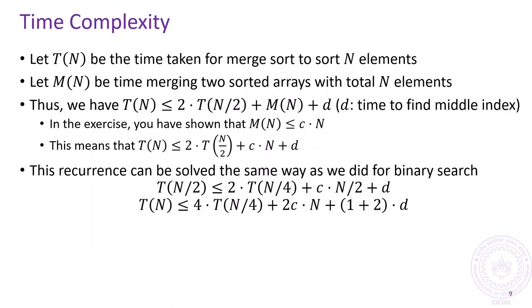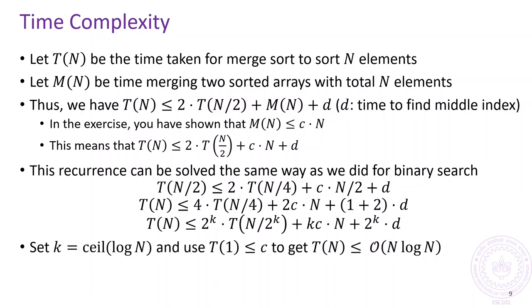This means that for any k greater than 0, we have T of n no more than 2 to the power k times T of n divided by 2 to the power k plus kc times n plus 2 to the power k into d. As we did for binary search, setting k equals log n and using the fact that T of 1 is no more than c, since an array with a single element is already sorted, we get that T of n is no more than order n log n.